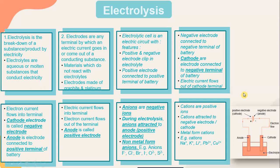Anions are negative ions. During electrolysis, anions are attracted to the anode — the positive electrode. Non-metals form anions, for example: F⁻, Cl⁻, Br⁻, I⁻, O²⁻, CO₃²⁻, and SO₄²⁻. Cations are positive ions, attracted to the negative electrode — the cathode. Examples of cations are: Na⁺, K⁺, Li⁺, Pb²⁺, and Cu²⁺.